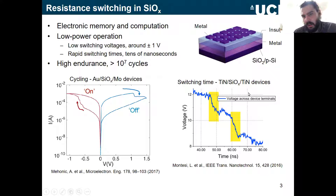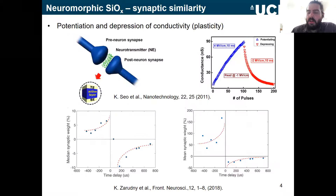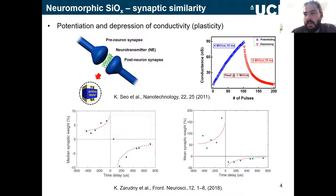We can observe switching events — in this case electroforming — occurring in tens of nanoseconds. Here this is the voltage reading across the terminals of a scope while the device is forming, so the behavior can be extremely quick and at very low voltage.